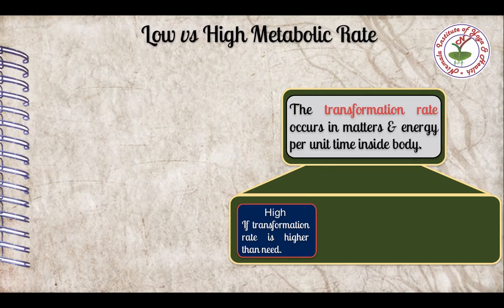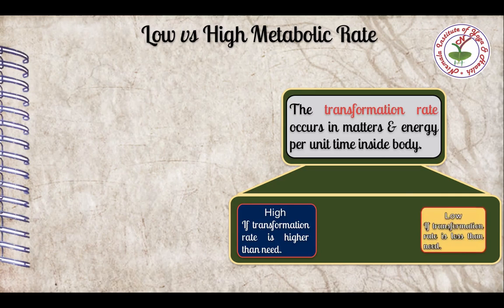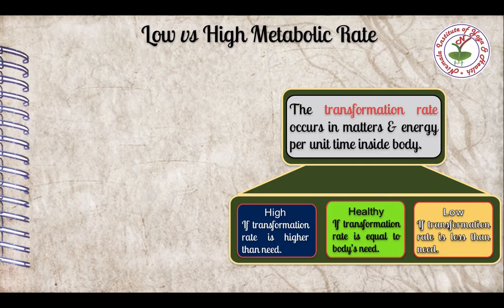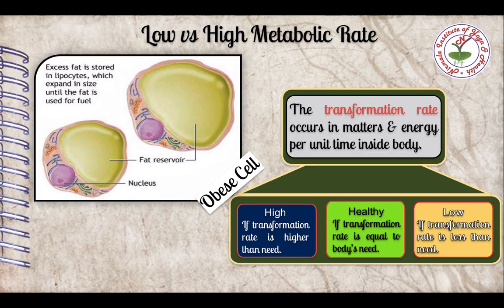High metabolic rate means the transformation rate is higher than body needs due to any abnormalities. Low metabolic rate means the transformation rate is lower than body needs due to any abnormalities. If the transformation rate is equal to bodily needs, then metabolic rate is healthy and you will be healthy. For example, you can see in this image an obese cell — a person suffering from obesity will have cells like this.